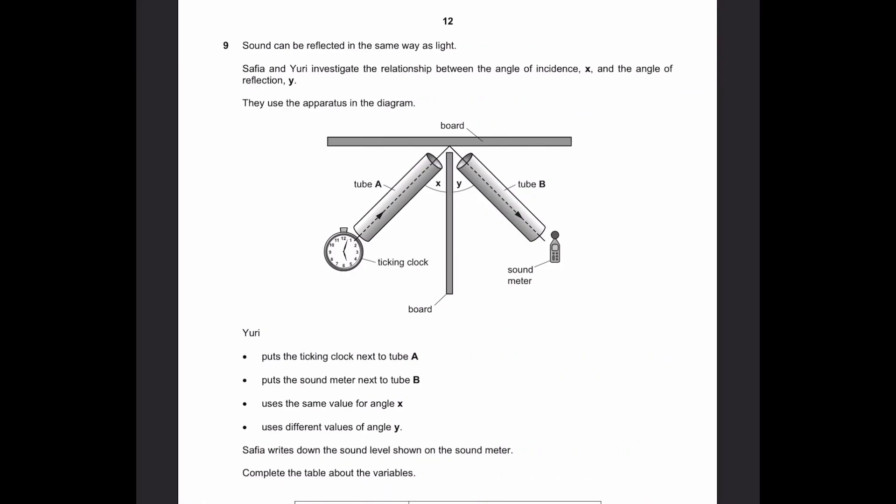Question 9. Sound can be reflected in the same way as light. Safiya and Yuri investigate the relationship between the angle of incidence X and the angle of reflection Y. They use the apparatus in the diagram. Yuri puts the ticking clock next to tube A, puts the sound meter next to tube B, uses the same value for angle X, uses different values for angle Y. Safiya writes down the sound level shown on the sound meter.